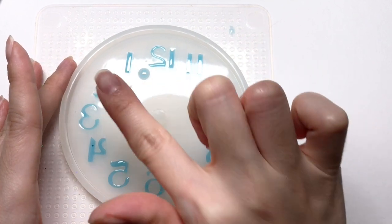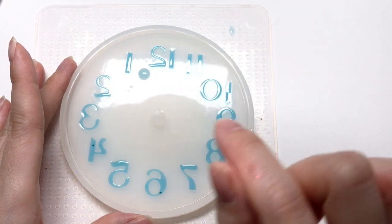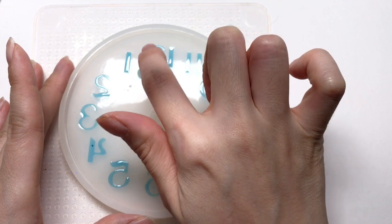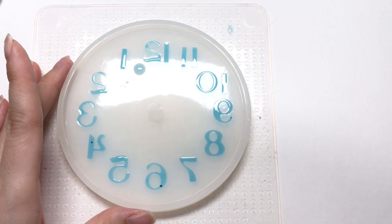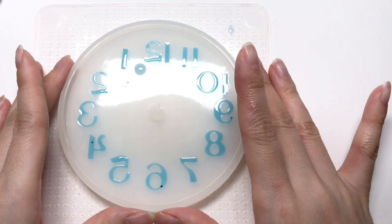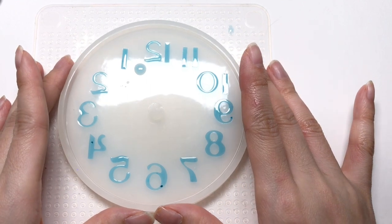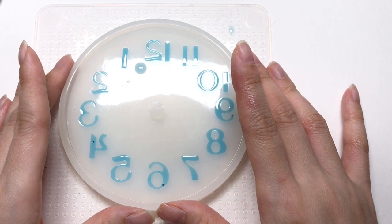As long as you don't have resin that is connected to the numbers, and they're just in droplet form, don't worry too much. I'm going to let the resin cure for about four hours. Five hours. We'll see. Four to five hours.